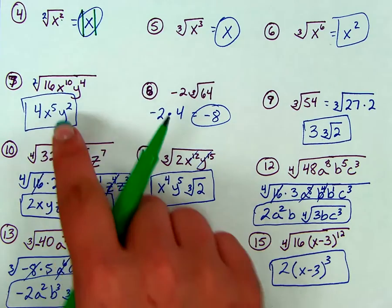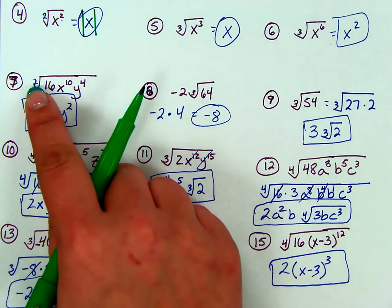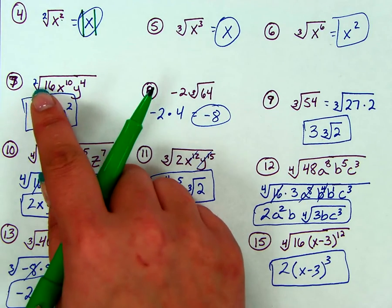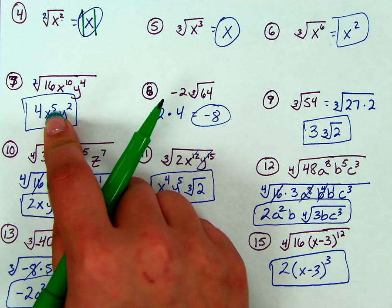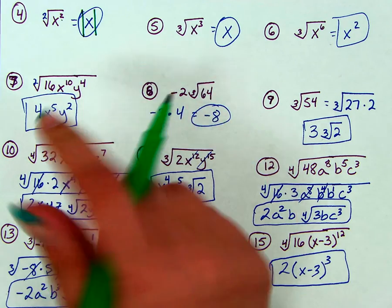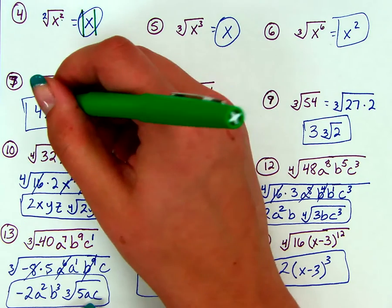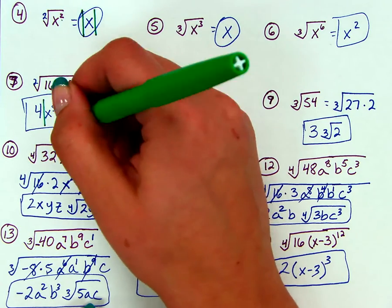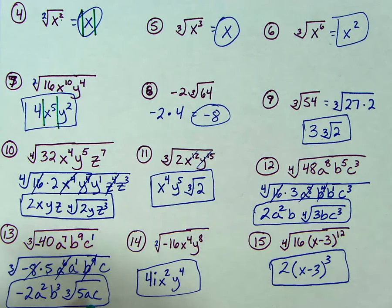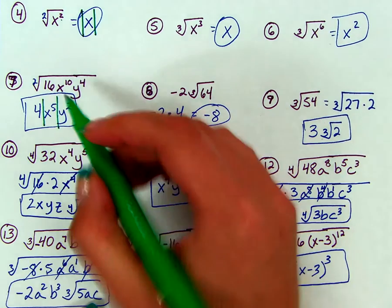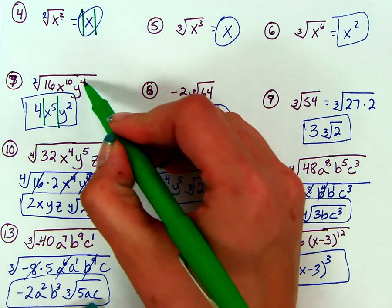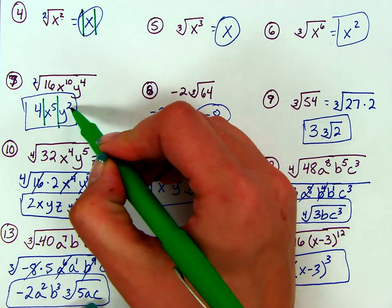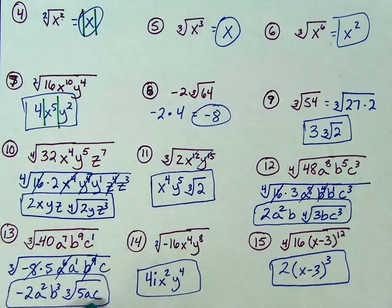Here I have an even root and an even power, and I have an odd power for my answer. So the x — just the x — has to go into absolute value symbols. On the y, when we look, we have even, even, even. So the rule doesn't apply.